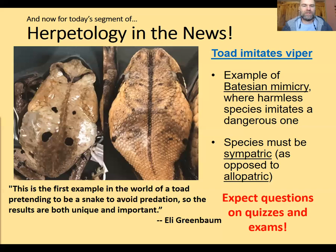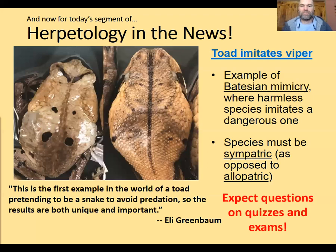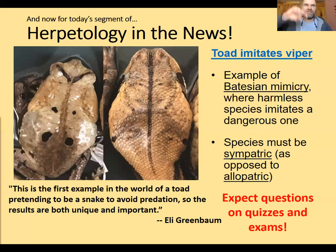There's a nice quote from the researcher: 'This is the first example in the world of a toad pretending to be a snake to avoid predation. The results are both unique and important.' I've put a link to a popular science article about this study as well as the original publication in your class program. There are actually lots of examples of Batesian mimicry in the reptile and amphibian world — including a caterpillar whose back end remarkably looks like a viper head.